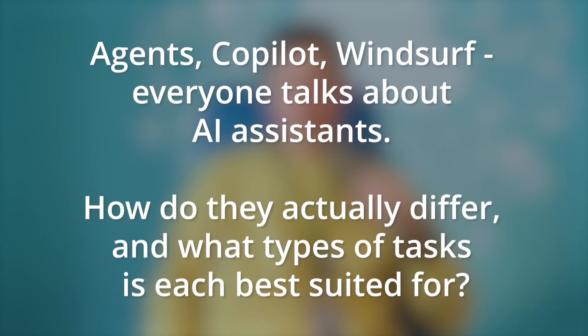Agents, Copilot, Windsurf — everyone talks about AI assistants. How do they actually differ and what types of tasks is each best suited for? I've tried a number of those tools by the nature of what I'm doing. The view is that underneath, the models are the same and the system prompts are not that much different. What makes the difference between them is usability — the user experience. The easier it is, the less pain, less clicks, the better for speeding up your productivity. It will just speed up what you're doing, whether you're a junior or senior developer — if you know how to use it.